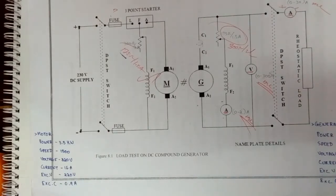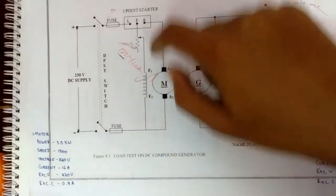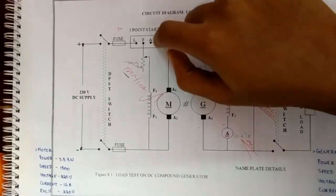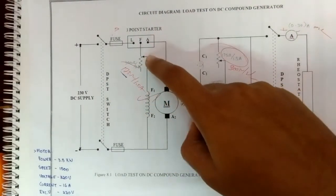So the procedure for this experiment: the DPSC switch 1 is closed and the motor is started using the three-point starter. The field rheostat of the motor is adjusted to get the rated speed of the motor.